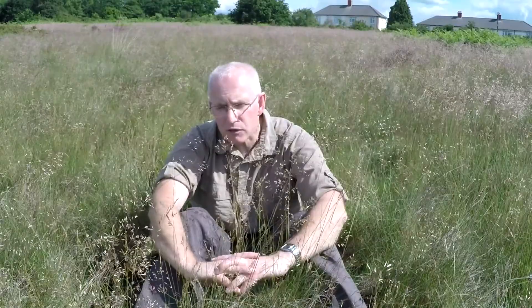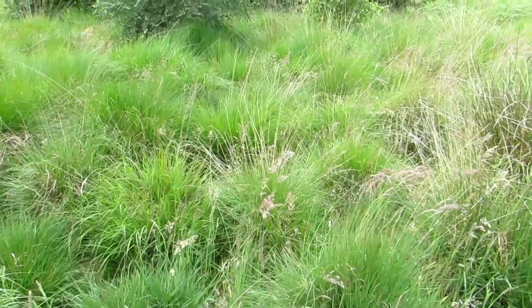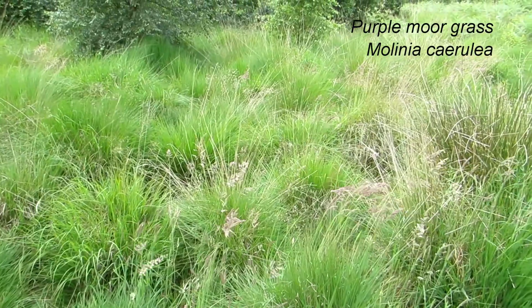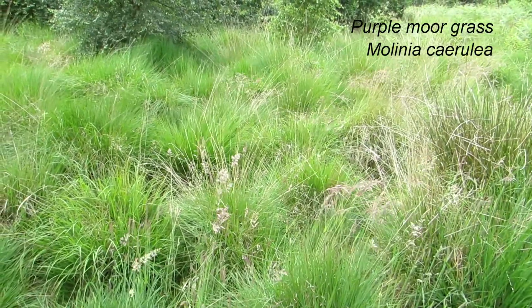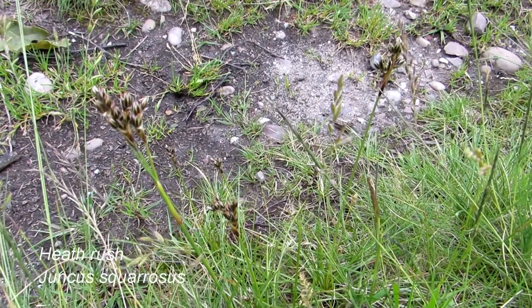Dry acid grassland is generally always going to be dry. The only place where it changes is if you're on a site — as we are here today — where there are some wetter parts, but then it's grading into something else. So it always tends to be very, very dry. Other species occur when it starts to get damper in acidic conditions — purple moor grass is something you'll see, and heath rush as well.